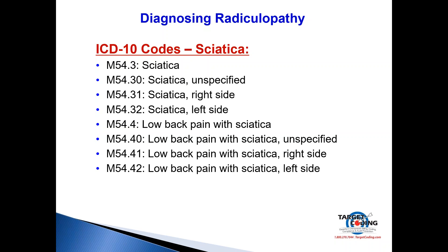ICD-10 includes some useful combination codes. In ICD-9, if a patient had low back pain and sciatica you had to use two codes. In ICD-10 there's a combo: M54.4 is low back pain with sciatica — however, don't use M54.40, which is unspecified. For right-sided low back pain with sciatica use M54.41, and for left-sided use M54.42.